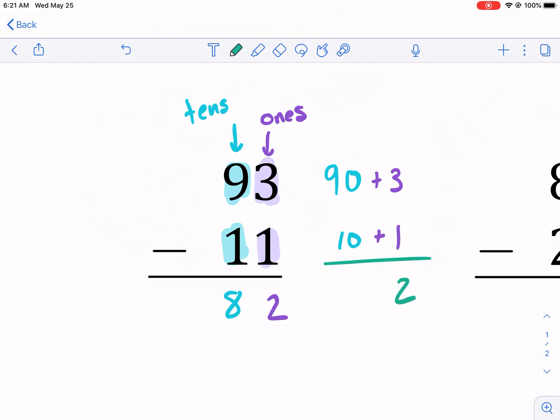3 take away 1, as a lot of people say, we get 2. And 90 subtract 10, 90 take away 10, we're going to get 80. What's 80 plus 2 is 82. So that's why it works that way.